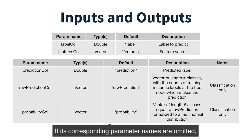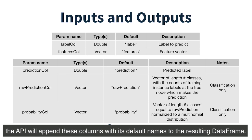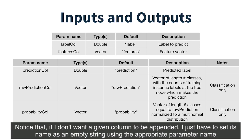If the corresponding parameter names are omitted, the API will append these columns with their default names to the resulting DataFrame. If you don't want a column to be appended, you just have to set its name as an empty string using the appropriate parameter name.